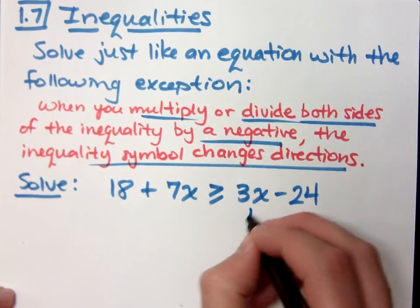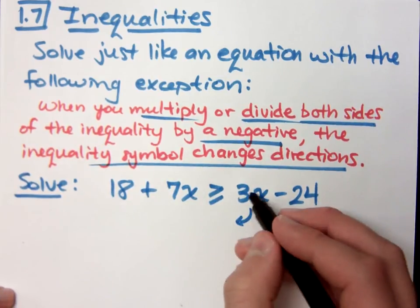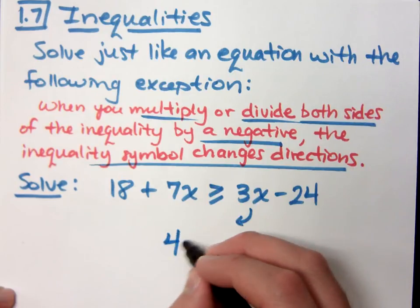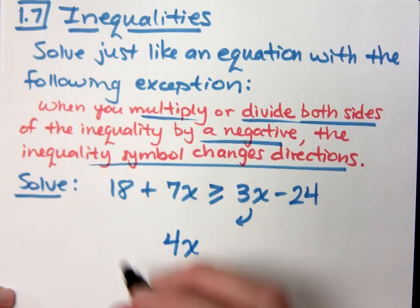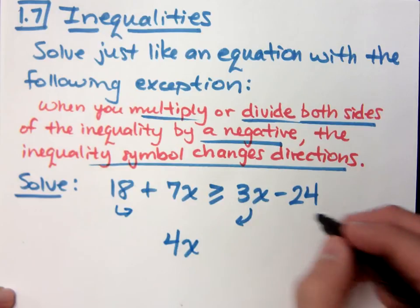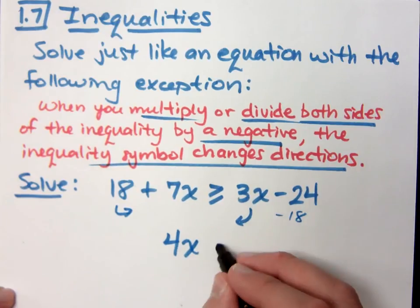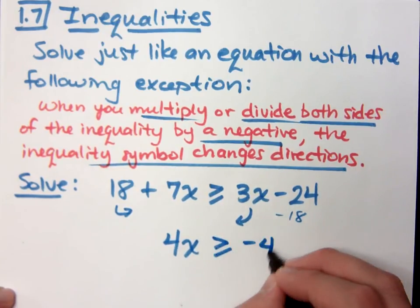We need to move the 3x to the left. So if I subtract the 3x, I get 4x, but now I've got to move the 18 to the other side. So it's minus 18 and I get negative 42.